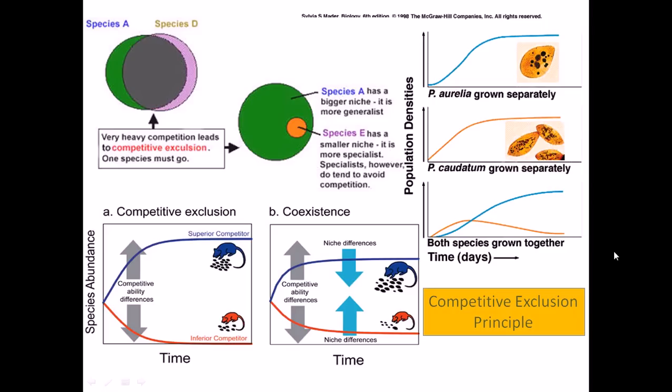Okay friends, now I am going to talk about a very important topic about the interaction between different species or populations. It is called the Competitive Exclusion Principle.